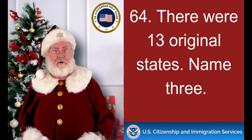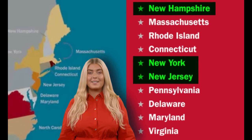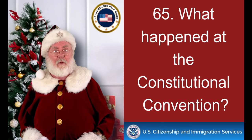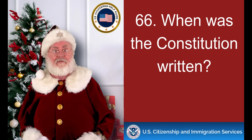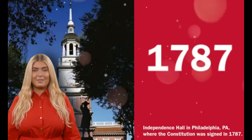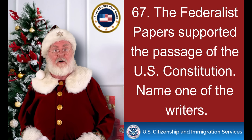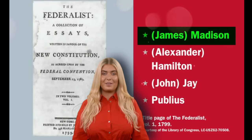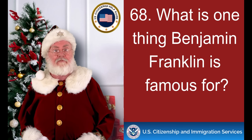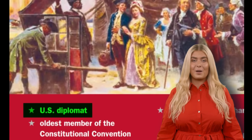There were 13 original states. Name three. New Hampshire, New York, New Jersey. What happened at the Constitutional Convention? The Constitution was written. When was the Constitution written? 1787. The Federalist Papers supported the passage of the U.S. Constitution. Name one of the writers. James Madison. What is one thing Benjamin Franklin is famous for? U.S. Diplomat.